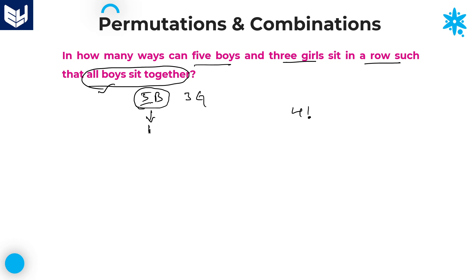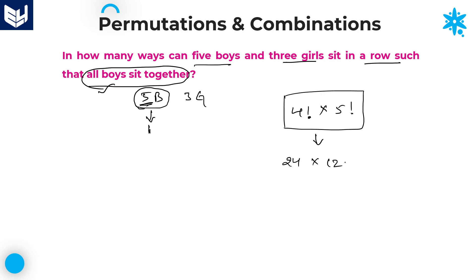Within this single entity, we have 5 boys, and those 5 boys can be arranged in 5 factorial ways. The required answer is 4 factorial multiplied by 5 factorial. 4 factorial is 24 and 5 factorial is 120. Multiplying these: 24 into 120 equals 2880.